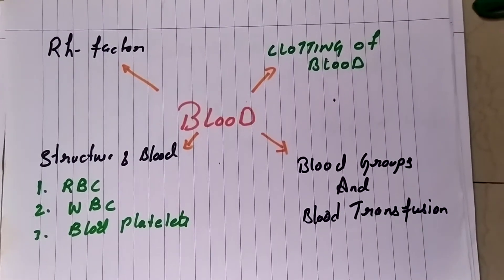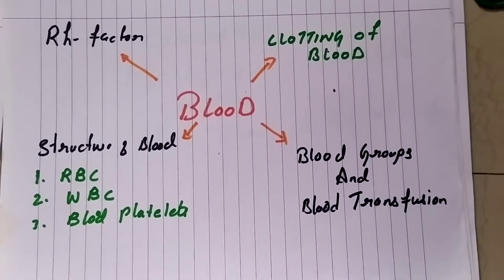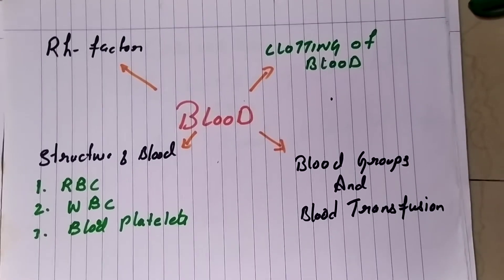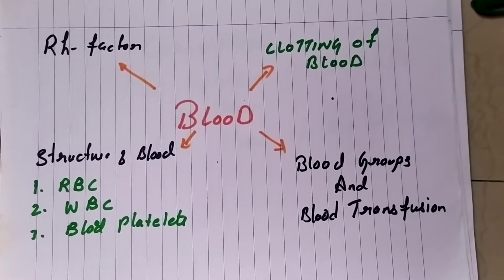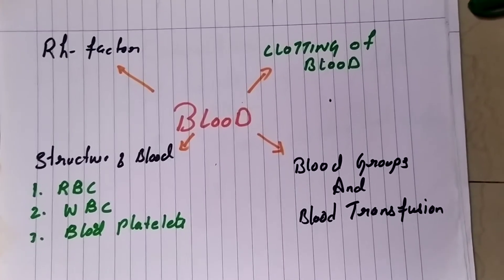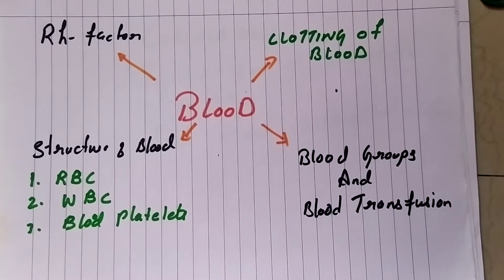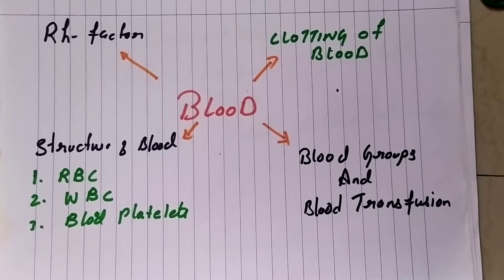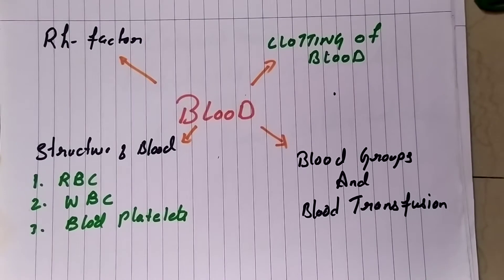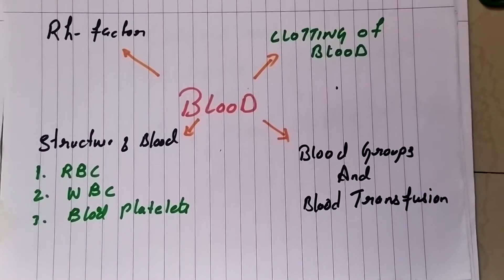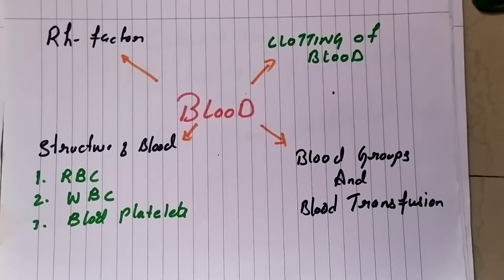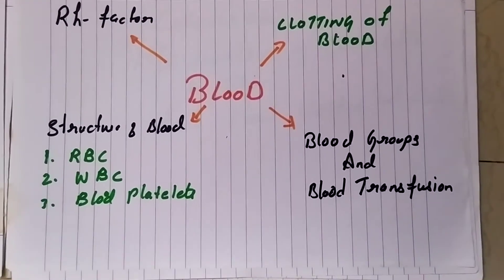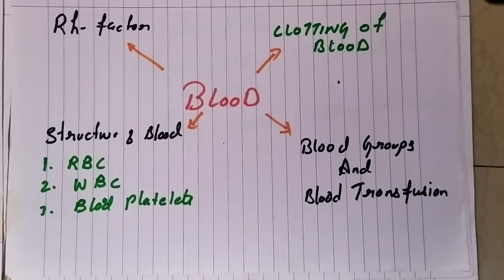The main functions of blood include: transport of gases — it carries oxygen from the lungs to body tissues and carbon dioxide from tissues back to the lungs. Transport of food — it carries soluble digested food like glucose, amino acids, and fatty acids from the intestine to various organs. Transport of excretory products — nitrogenous waste is transported by blood from tissue cells to the liver, and from the liver to the kidneys, where it is eliminated as urine.